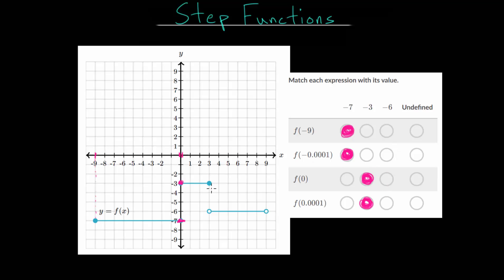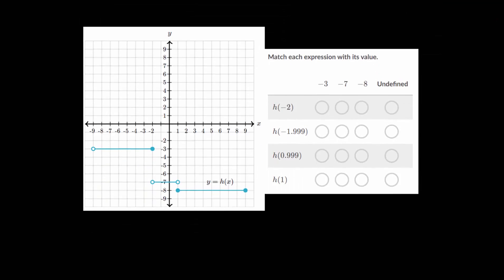So something like 3.01 would be down here at negative 6. But if we actually plugged in f of 3 that would still be at this negative 3 here. So with these problems you really just need to be very careful on the borders of these different steps. Let's move on and look at some different problems here.